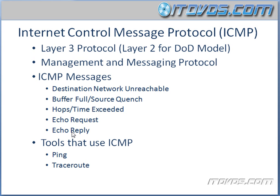Echo Request and Echo Reply are commonly used in Ping, which is a tool that uses ICMP to troubleshoot network issues. All Ping does is basically send an ICMP echo request to another IP address, and then if it reaches that host — whatever the destination is — that host sends back an echo reply and says, hey, I'm up.